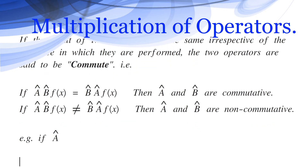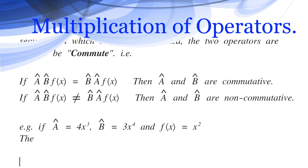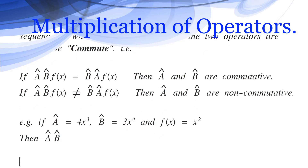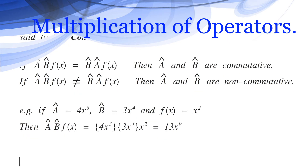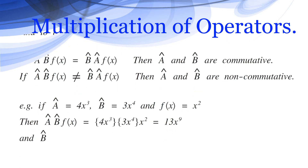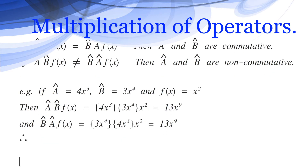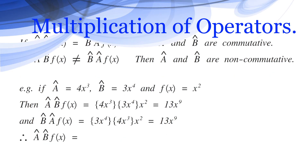For example, if Â = 4x³ and B̂ = 3x⁴ and f(x) = x², then ÂB̂f(x) = 4x³ · 3x⁴ · x² = 12x⁹, and B̂Âf(x) = 3x⁴ · 4x³ · x² = 12x⁹. Therefore ÂB̂f(x) = B̂Âf(x). Thus, Â and B̂ are commutative.